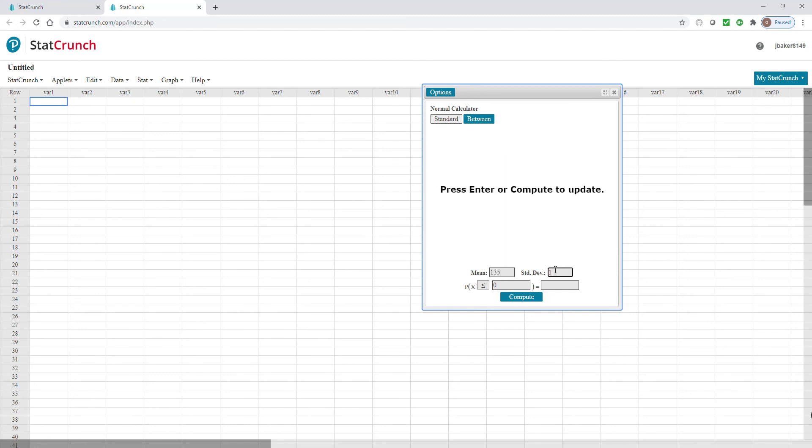My standard deviation is 40. And so, I want to know what's the probability of repair being less than 90. So, if I hit 90 in there and hit Compute, I get a probability of 0.1303 or 13.03%.